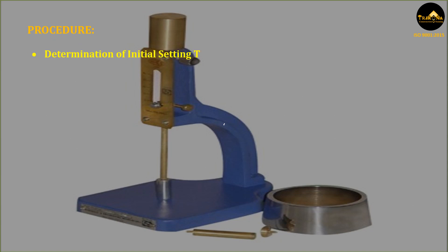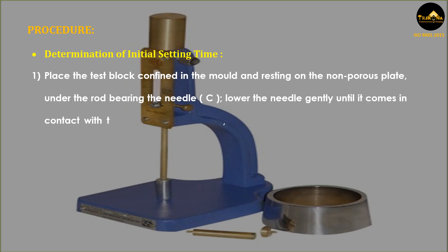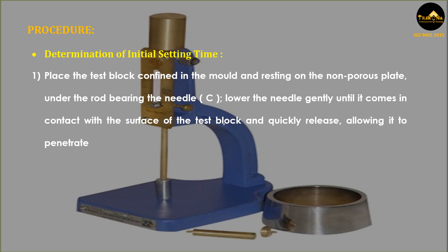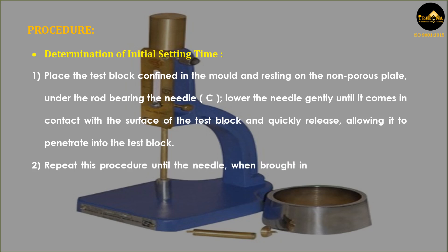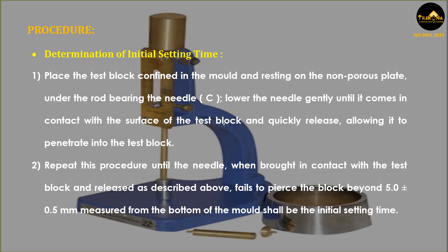Determination of initial setting time: Place the test block confined in the mold and resting on the non-porous plate under the rod bearing the needle. Lower the needle gently until it comes in contact with the surface of the test block and quickly release, allowing it to penetrate into the test block. Repeat this procedure until the needle, when brought in contact with the test block and released, fails to pierce the block beyond 5.0 ± 0.5 millimeters measured from the bottom of the mold — this shall be the initial setting time.